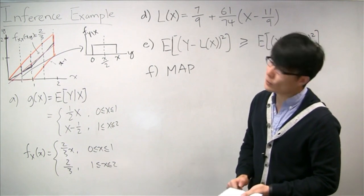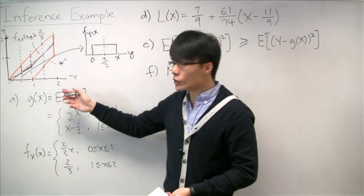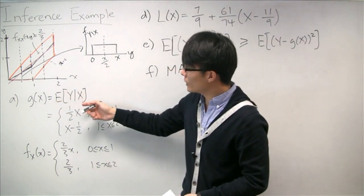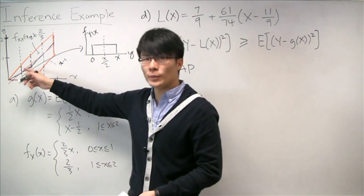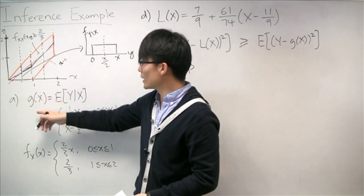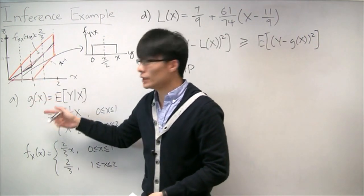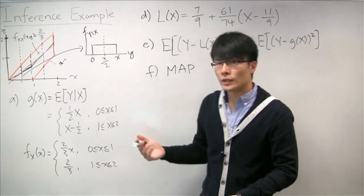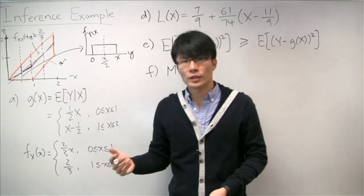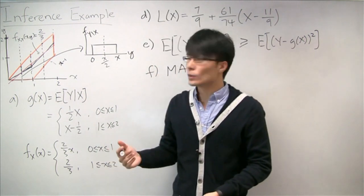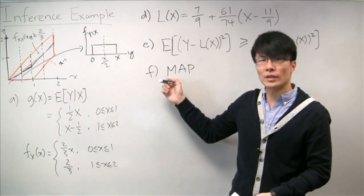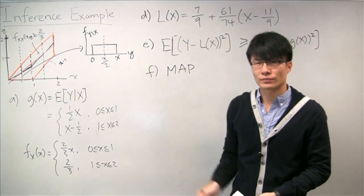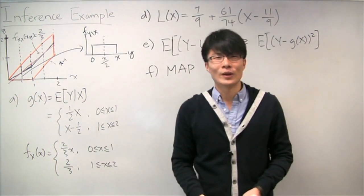In this problem, we reviewed a bunch of different ideas in inference. We took a joint PDF of X and Y and used it to calculate the LMS estimator, the linear LMS estimator, compared the two, and looked at why the MAP estimator doesn't make sense in this case. I hope that was helpful, and we'll see you next time.